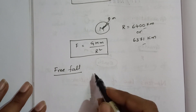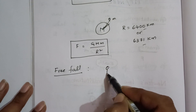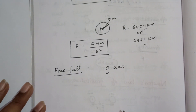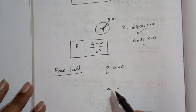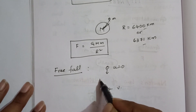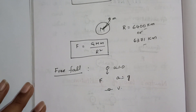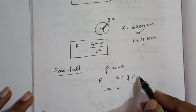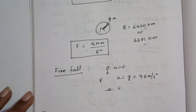In free fall, the initial velocity is zero but the final velocity increases because of the gravitational force acting on the body. This acceleration is called acceleration due to gravity, and on the surface of Earth it is nearly equal to 9.8 meters per second squared.